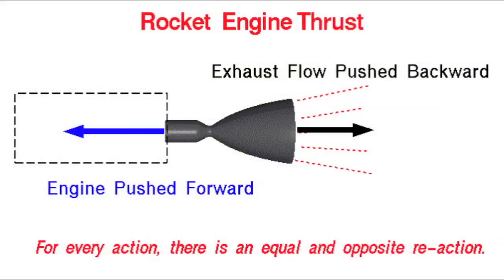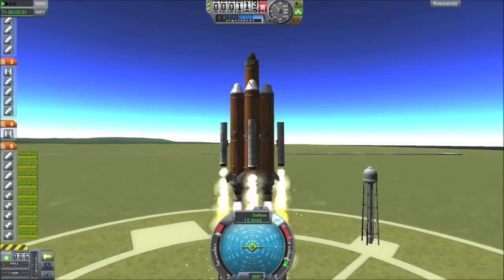At its most basic, all rocket fuels are reaction mass — they harness the power of Newton's second law to accelerate the spacecraft. All rocket engines work on the principle of applying force to a mass in one direction so that the equal and opposite force is applied in the other direction. We throw mass out in one direction at high speeds, and the reaction applies a force in the opposite direction, resulting in an acceleration of the spacecraft.